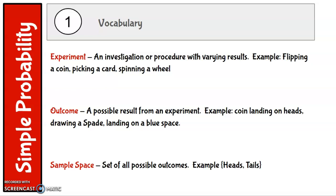Sample space is the set of all possible outcomes. For example, with the flipping a coin, the set is heads and tails. And we put it with little squiggly brackets like that. Those are all the possible outcomes from flipping a coin.